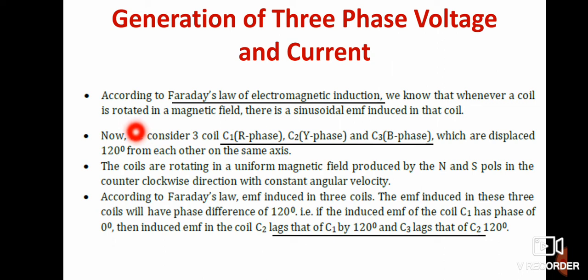According to Faraday's laws of electromagnetic induction, whenever a coil is rotated in a magnetic field, there is a sinusoidal induced EMF in the coil. This is a dynamically induced EMF. We consider three coils: C1 at R phase, C2 at Y phase, and C3 at B phase, which are displaced at an angle of 120 degrees.